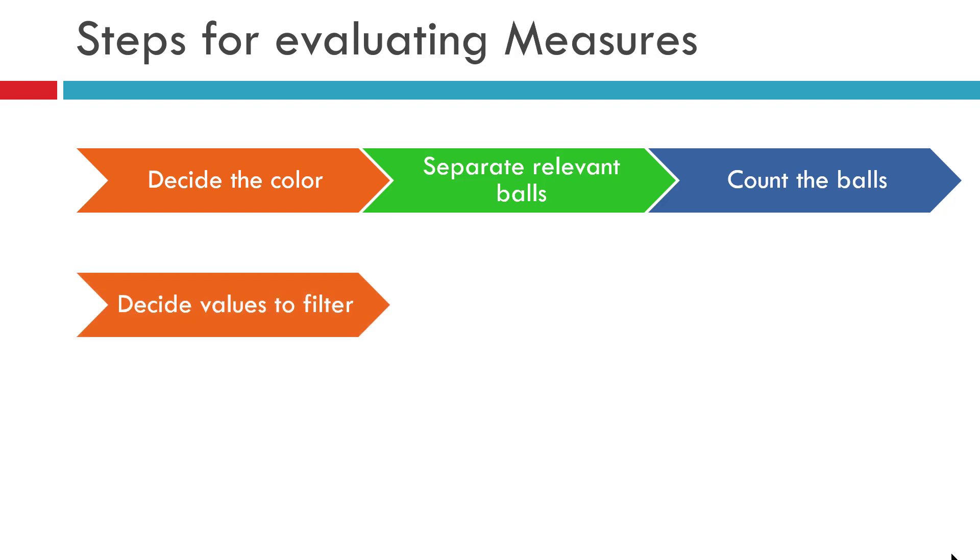Here, the first step is deciding the items to be considered or filtered out from your table. It's just like deciding the colors which you are interested in and counting those balls. The items which need to be filtered will be picked up by the DAX engine from your visuals, slicers, page level filters, report level filters, or row and column headers. If you have selected any single item or multiple items, all of them will be considered.